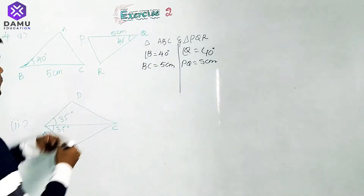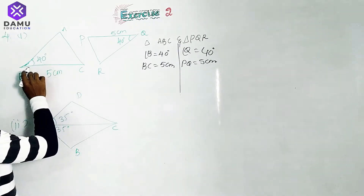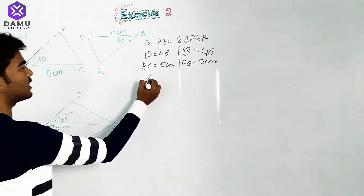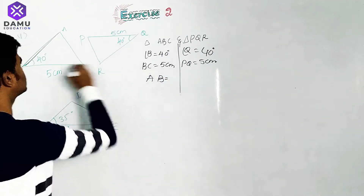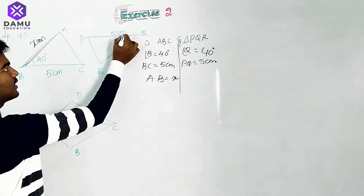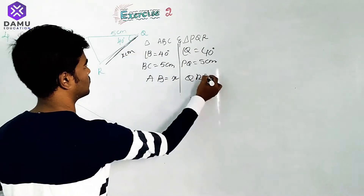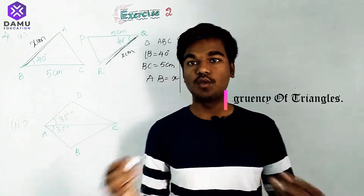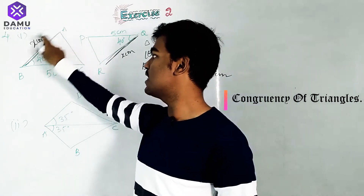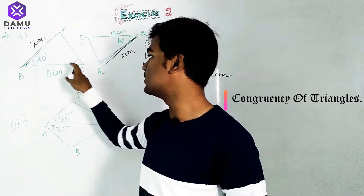Here, BC is a known side and angle B is the known angle. So the next side we need is AB. Let's say AB equals x centimeters. Similarly, in triangle PQR, QR will be x centimeters. Starting from side AB as x, then angle B at 40 degrees, then BC at 5 centimeters.